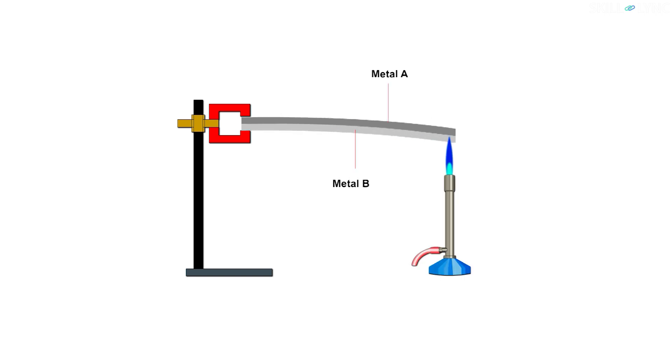On heating, the strip bends towards the side having a smaller coefficient of thermal expansion. This simple phenomenon can cause the strip to exert a load on one side, thus inducing compression on one side and tension on another.